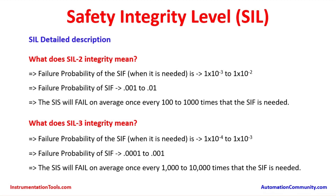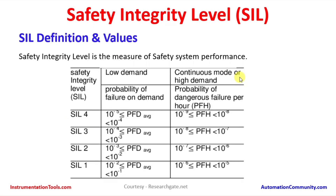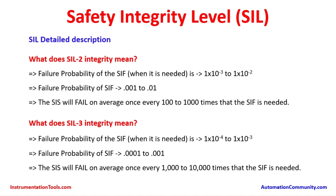For SIL 2 integrity, the probability of failure of the SIF ranges from 1×10⁻³ to 1×10⁻², which is a PFD average equivalent to 0.001 to 0.01. In practical terms, the SIS will fail on average once every 100 to 1000 times when the SIF is needed. That means for every 100 to 1000 demands, there is a probability of failing once — that is SIL 2 integrity.